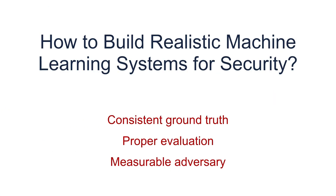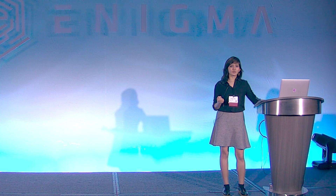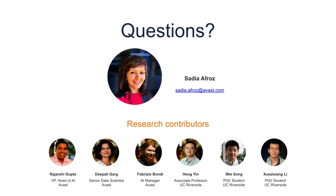In summary, to build a realistic machine learning model for security, we need a notion of consistent ground truth, we need to evaluate classifiers at realistic low false positive rates, and we need a notion of measurable adversary. So far we have simple heuristics to build consistent ground truth and evaluation, but creating a measurable adversary is still an open problem.